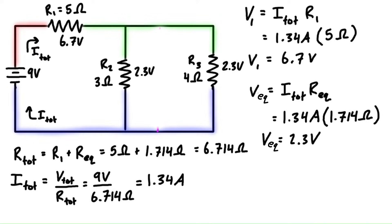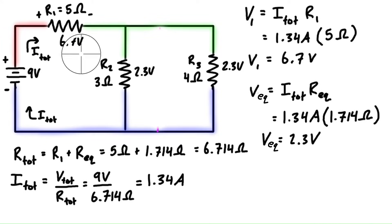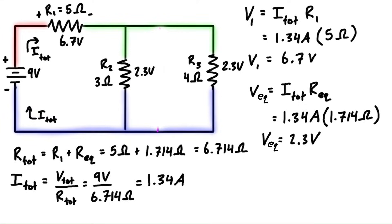Now we can also indicate the polarities. On the battery we have the negative terminal and the positive terminal based on how the battery is drawn. Looking at this resistor, the red node is 6.7 volts higher than the green node, so we have the positive and the negative like this. Current is flowing — the positive current is flowing into the positive terminal of the resistors. And then we have the same thing for the parallel resistors: positive side, negative side. I did a video on the passive sign convention of circuits — if you're interested, you can check the link in the top right corner. It talks about these polarities.